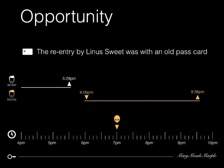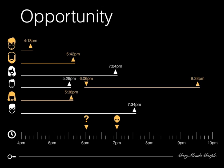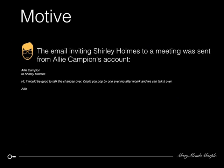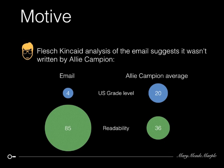Which means we shouldn't be worrying about who was in the office at the time of the murder, but who wasn't. Ali Campion our manager, Sam Shovel our illustrator, Hera Boiret our designer. What about Ali? The email inviting Shirley Holmes to the meeting that evening was sent from Ali's account — but look at that email. There's a spelling mistake, but it's readable. No obscure four-syllable words, no management jargon, no impenetrable sub-clauses — no resemblance at all to anything Ali would write. Flesch-Kincaid analysis shows it was more stupid and much more readable than Ali's usual emails. Ali didn't invite Shirley at all.